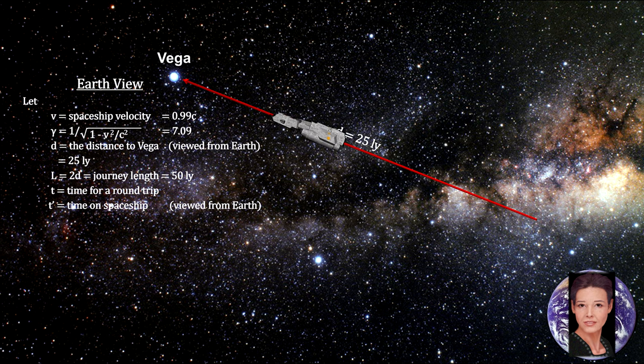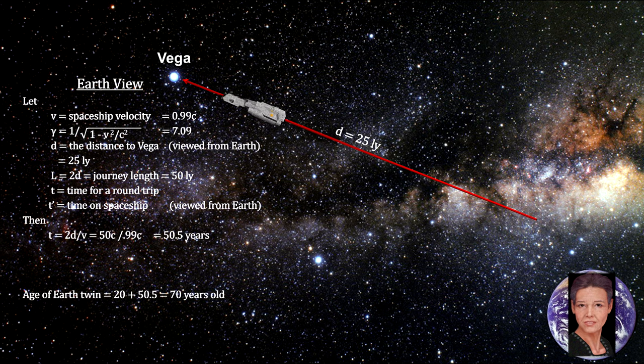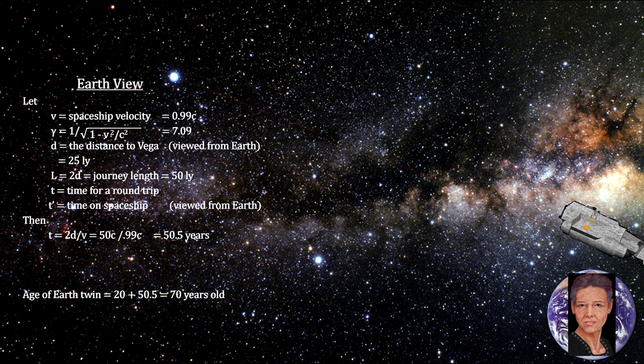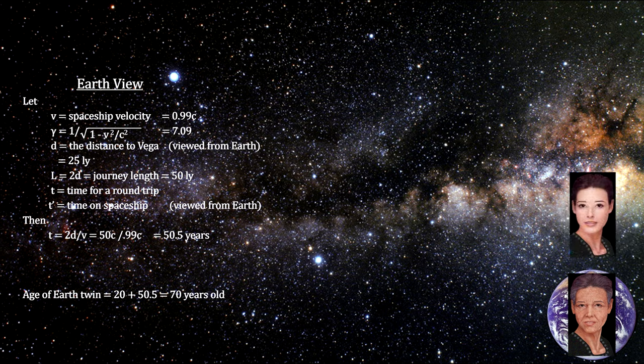The person on the Earth sees the trip taking just over 25 years, and the trip back taking the same amount of time. She is over 70 years old when the ship carrying her twin sister arrives back on Earth. But she also observes that her twin's clock ran a good deal slower than hers during the trip. Her twin is aging more slowly than she is.